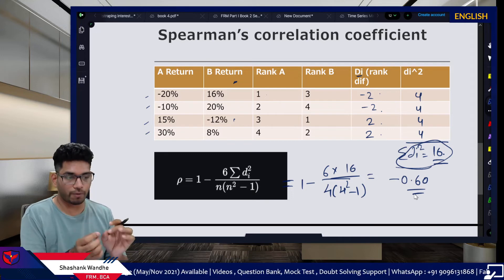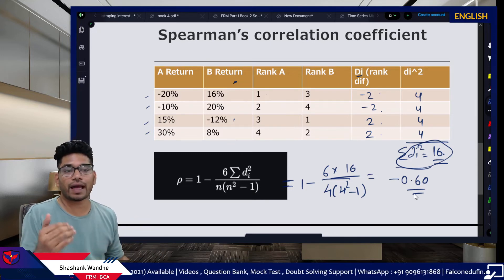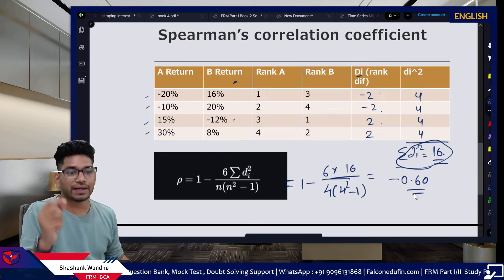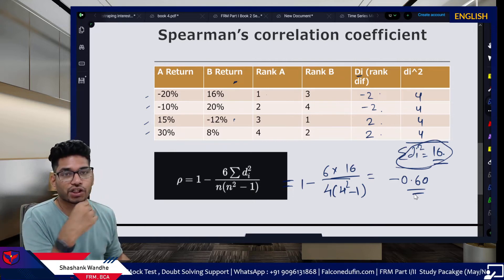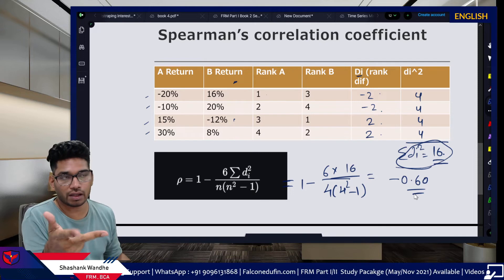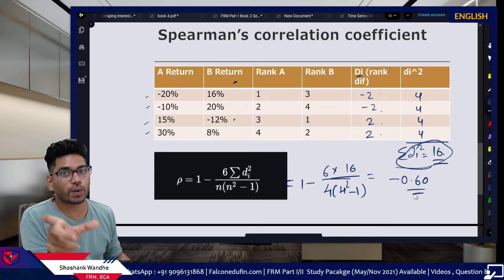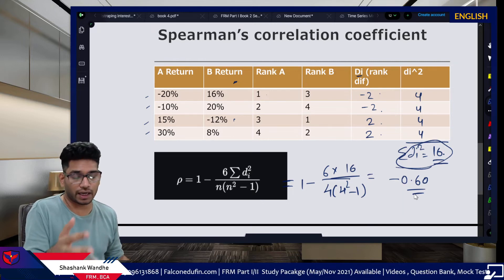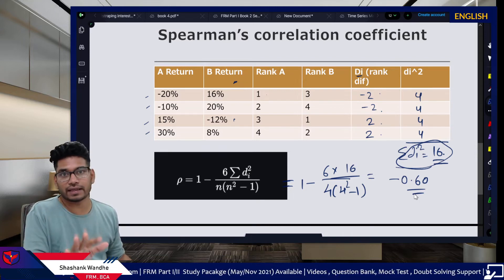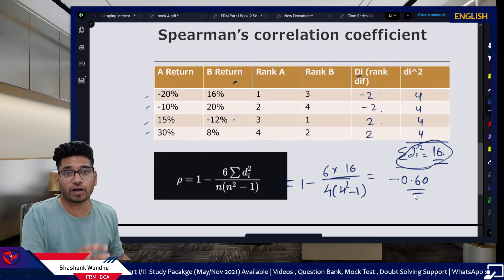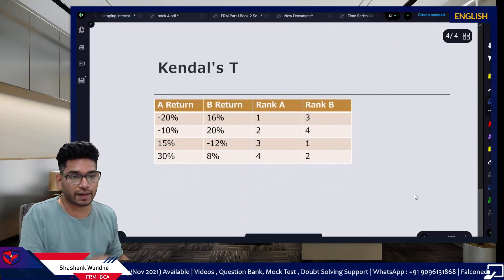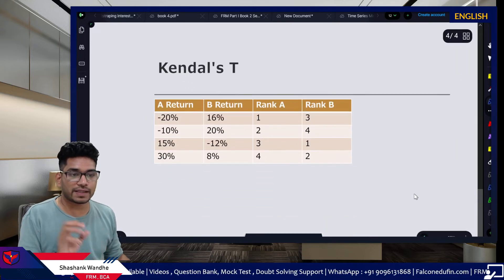So we have a nonlinear correlation of minus 0.60 — negative, straightforward if you know the formula. This is a very favorite area of GARP. Before 2020, it was in FRM Part 2; after 2020 updates GARP shifted both Spearman's and Kendall's tau into FRM Part 1. This is still considered a favorite section from the exam perspective, so you are more likely to get questions on both areas. Now we will move to Kendall's tau correlation coefficient.